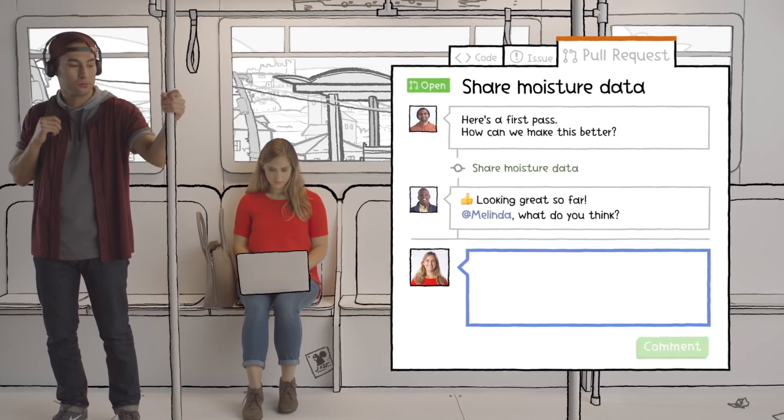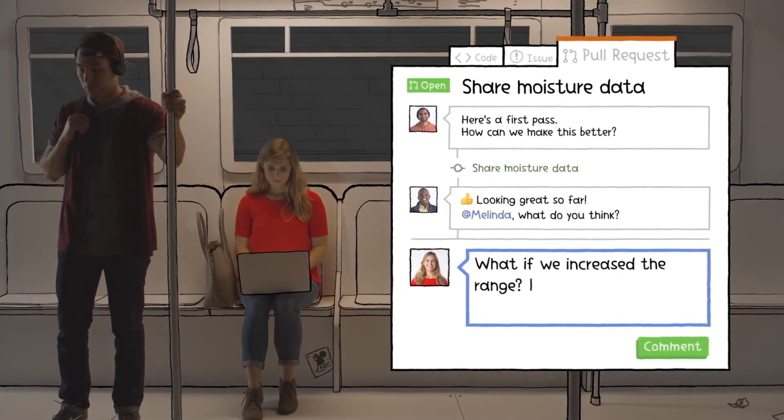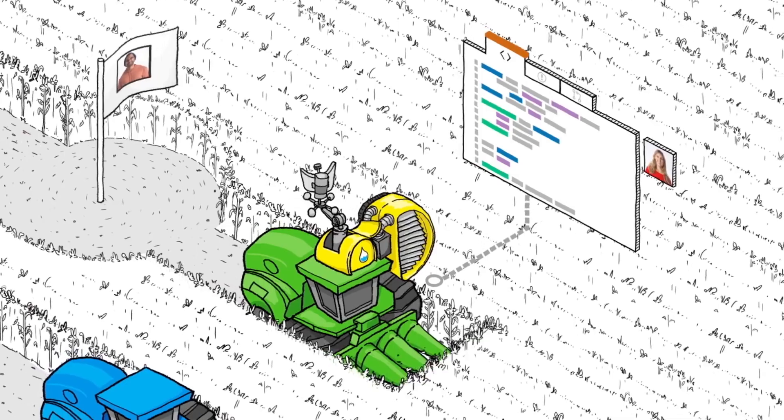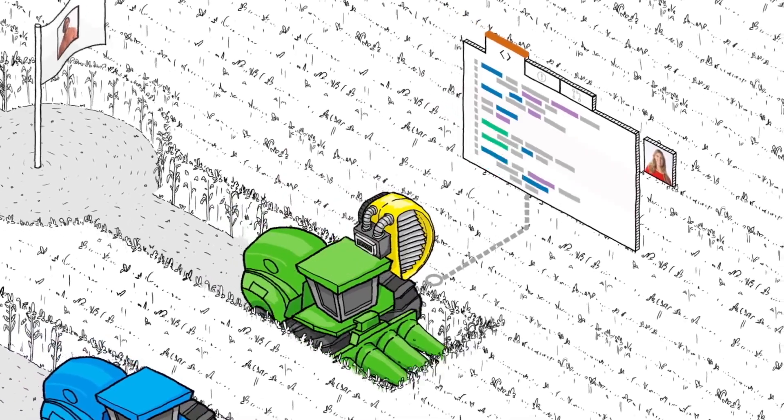On GitHub, everyone has a copy of the project. So if Molinda has an idea for something that will help make Vijay's work even better, she can add it to the branch herself.